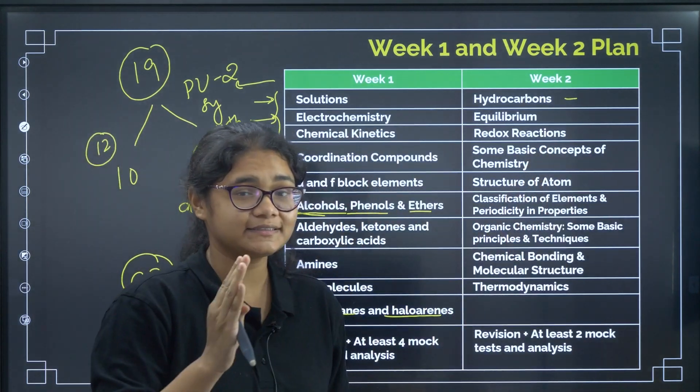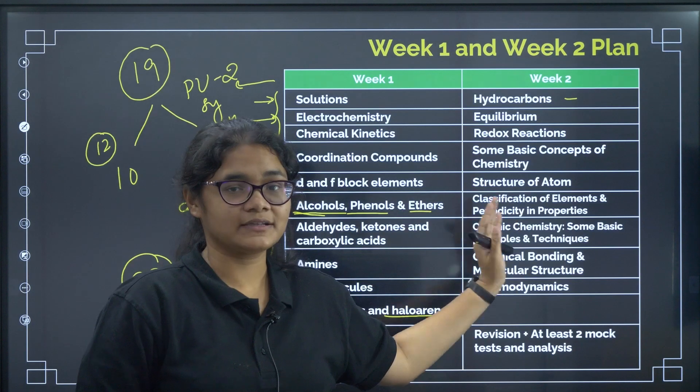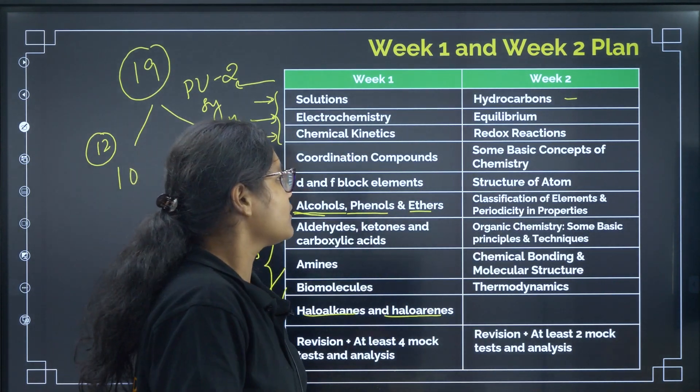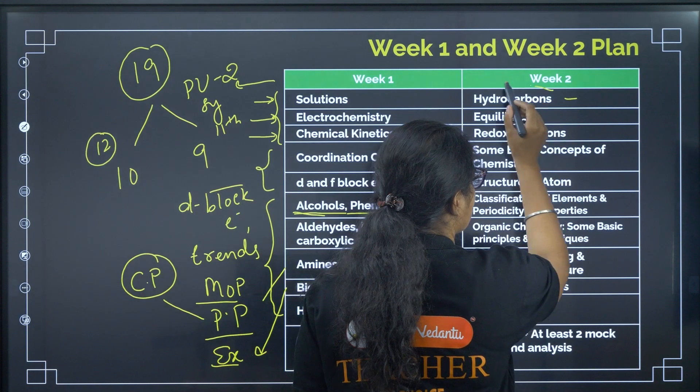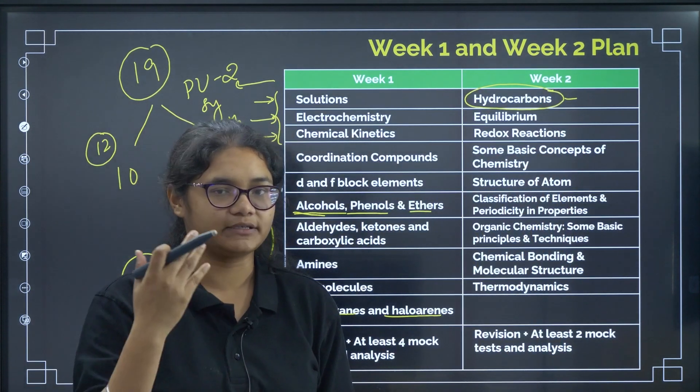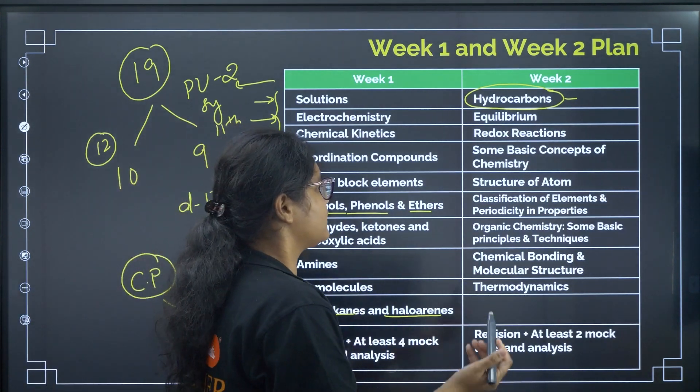Next, coming to week 2. My sincere advice is, if you have done with these chapters, then only go for these chapters. Otherwise, first preference is for these 10 chapters. Now, coming to week 2. We have hydrocarbons topic. Just alkanes, alkenes, methods of preparation, chemical properties, isomerization, examples, these all things you can remember. Equilibrium, very important. Chemical equilibrium give more importance. Ionic equilibrium, I'll tell, you can just leave it if you haven't done it yet. Chemical equilibrium is easy and scoring. Questions are also asked. So, give more importance to chemical equilibrium.